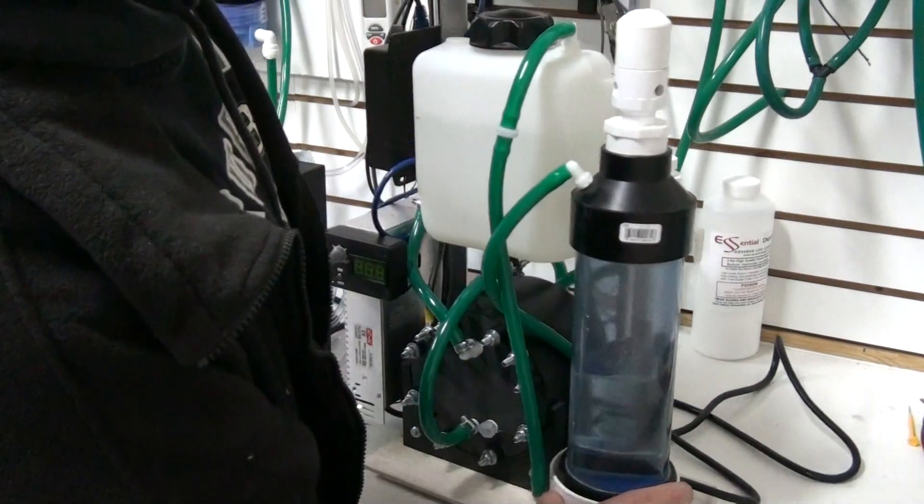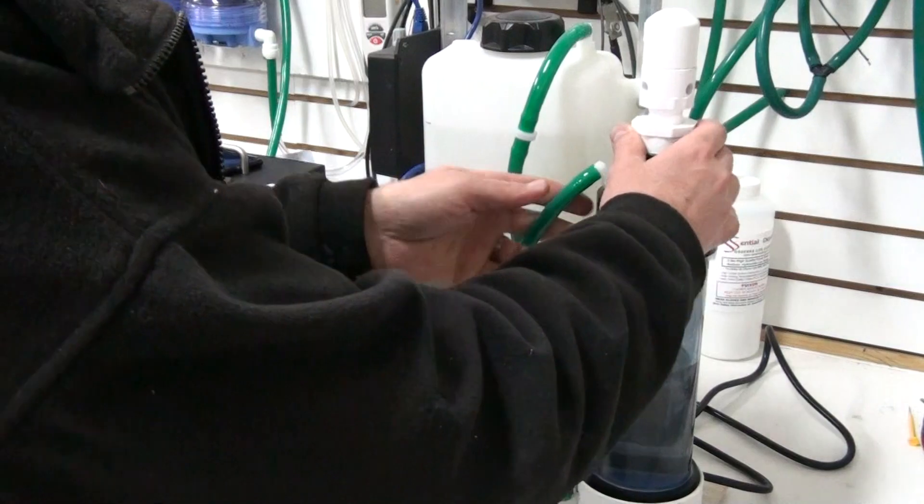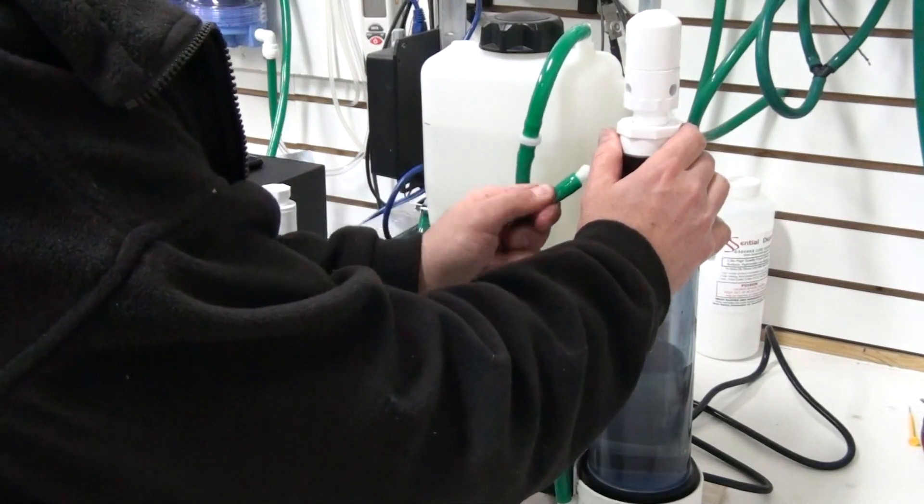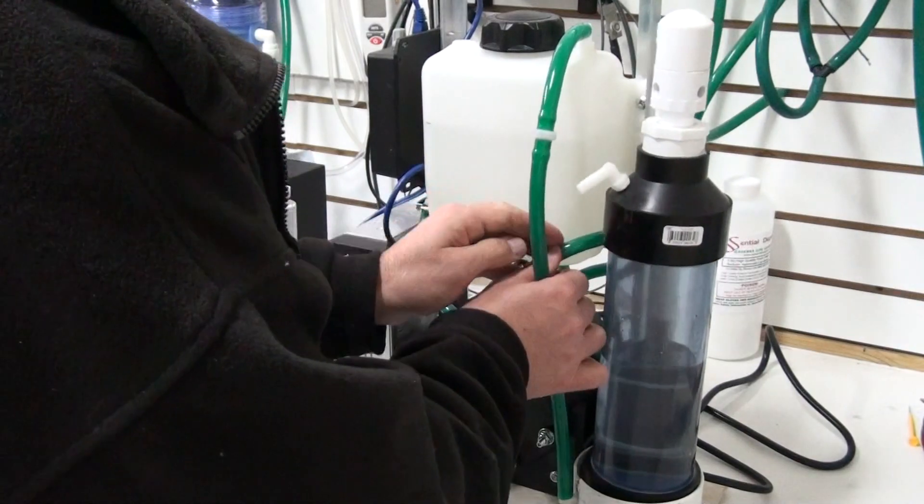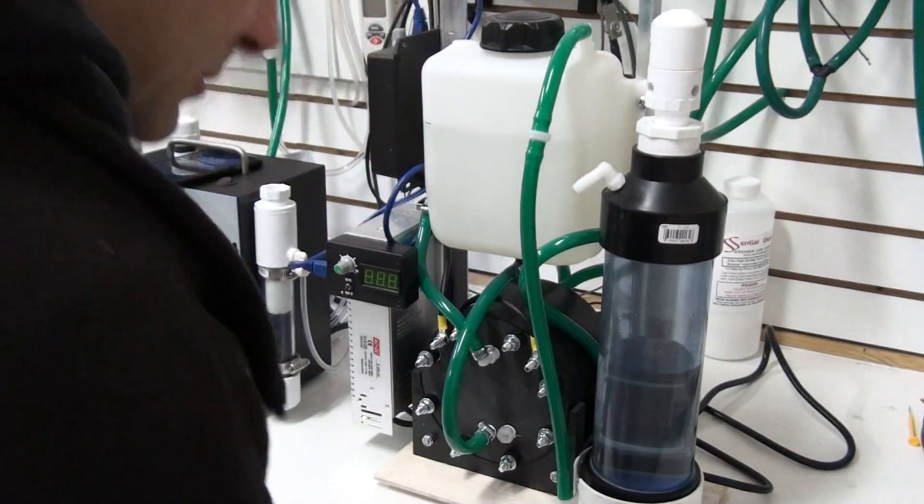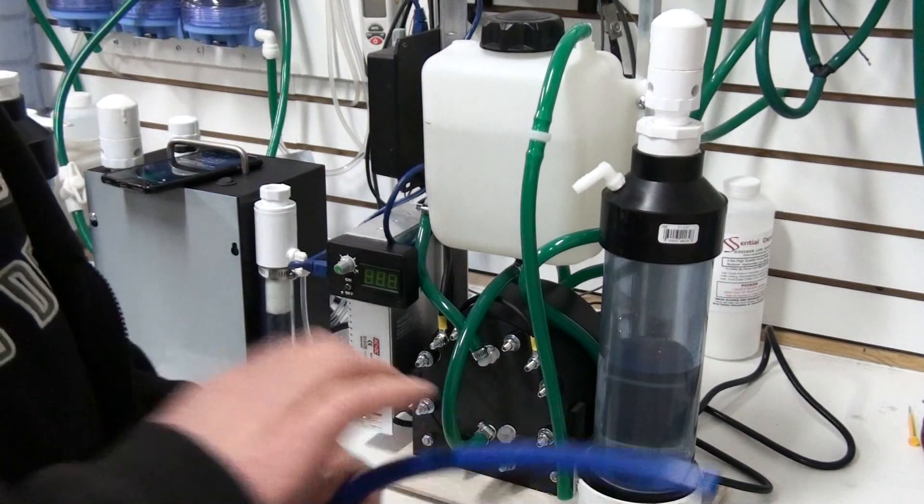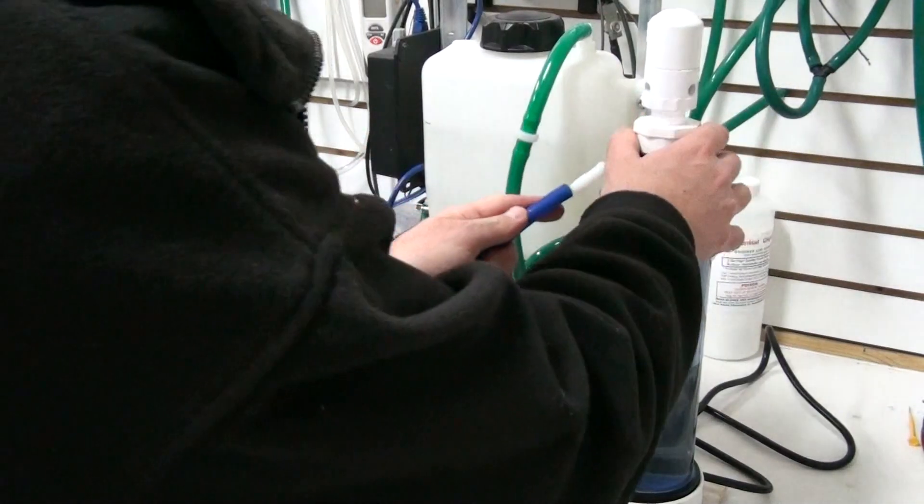That's done very simply. All you have to do is pull this hose off here. It goes down to the filter, and you're going to take the hose of your torch and just connect it right to the bubbler.